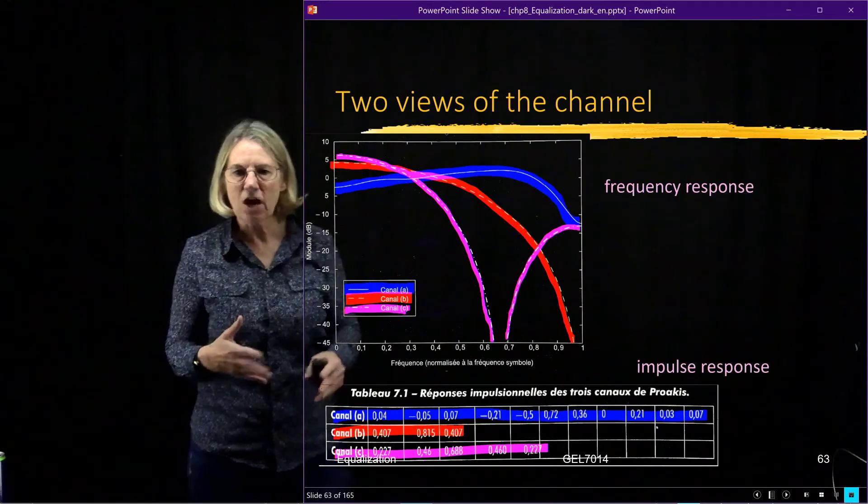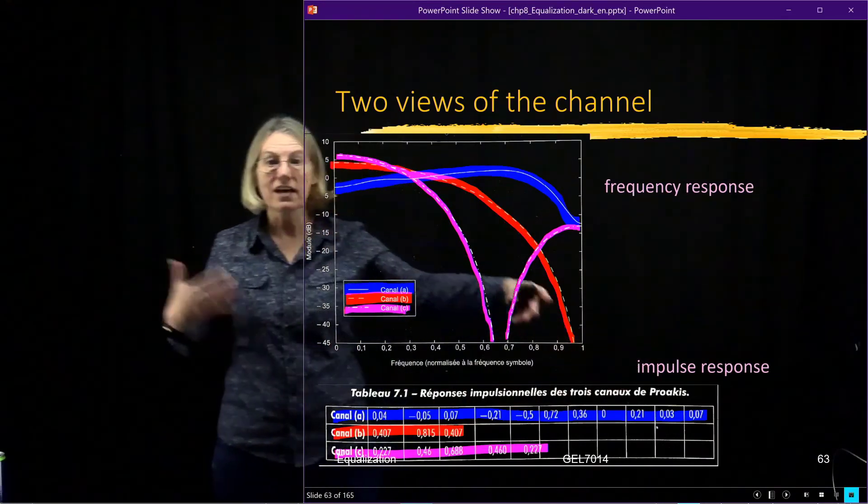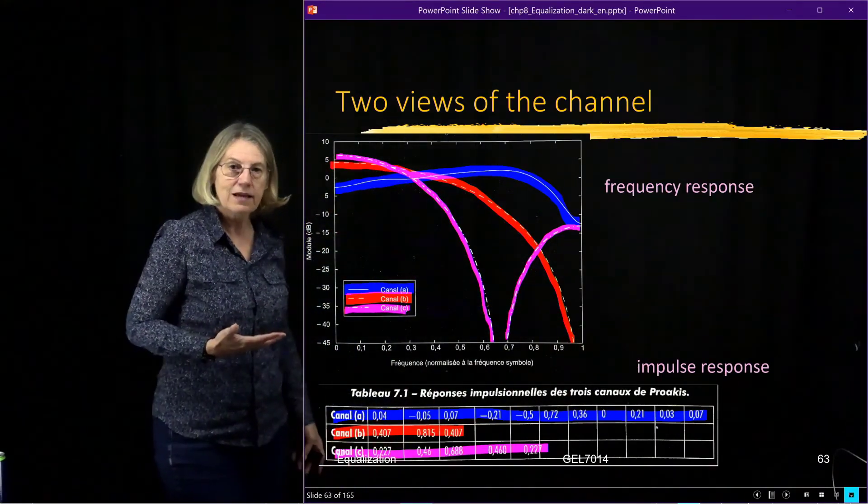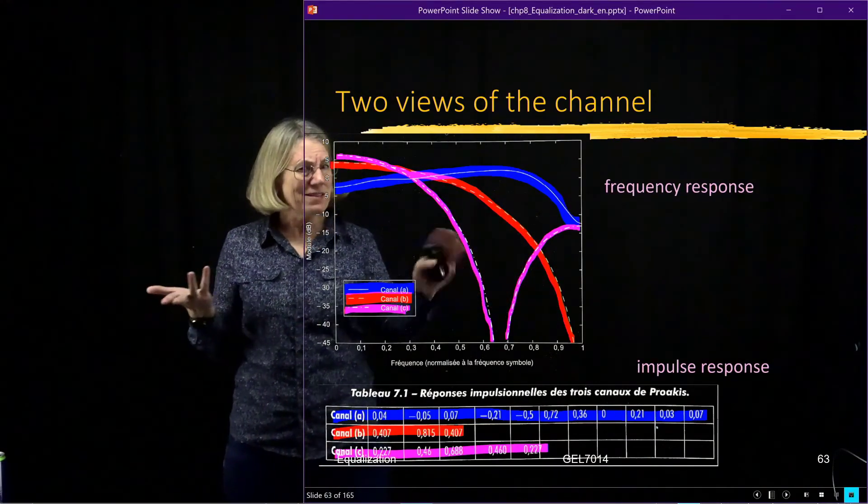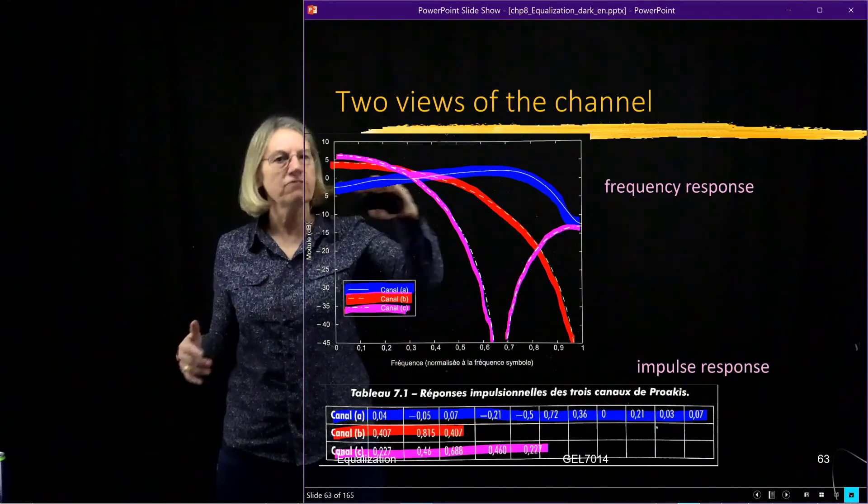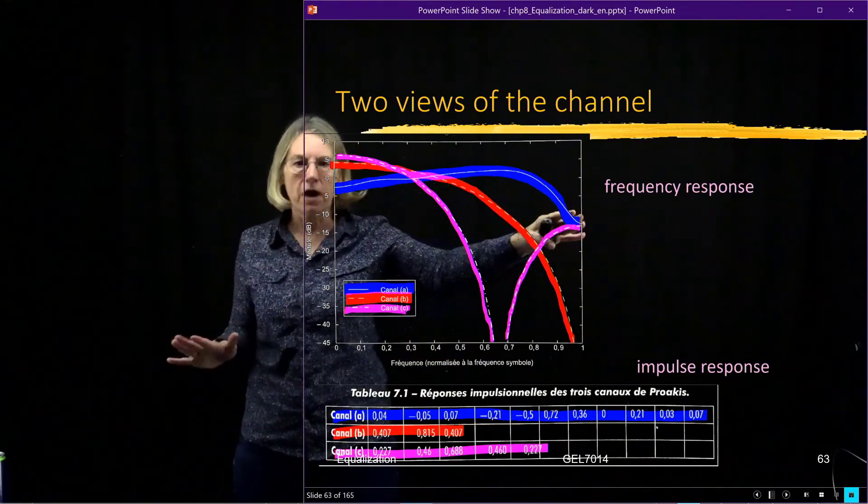You might think that the blue has got a long memory, it's got lots of taps in it. But when I look in the blue in the frequency domain, I'm thinking this channel doesn't look too bad. It's pretty flat and dips a bit at the end but not too much. So when I can find the inverse of this, it's not going to enhance the noise too much.